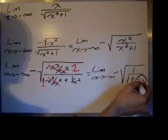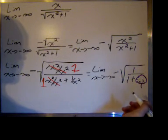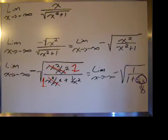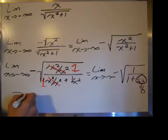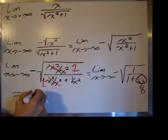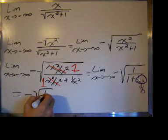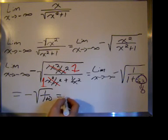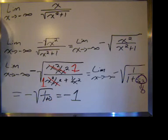since it's negative infinity, x squared will be a positive number, so one over infinity goes to zero. So now we've taken the limit, and we're left with negative square root of one over one plus zero, if you will, and that, of course, simplifies into negative one.